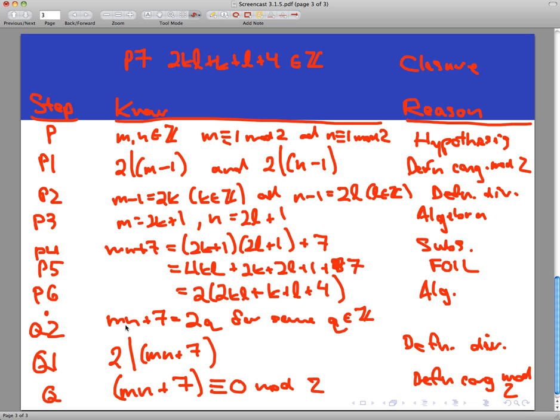And now, finally, I can connect. Q2 is going to follow because I'm just going to set Q equal to 2KL plus K plus L plus 4. The thing in parentheses. That's my Q. And then my backward steps have prepared the way for me to get to the end here. And so that's a completed proof here.